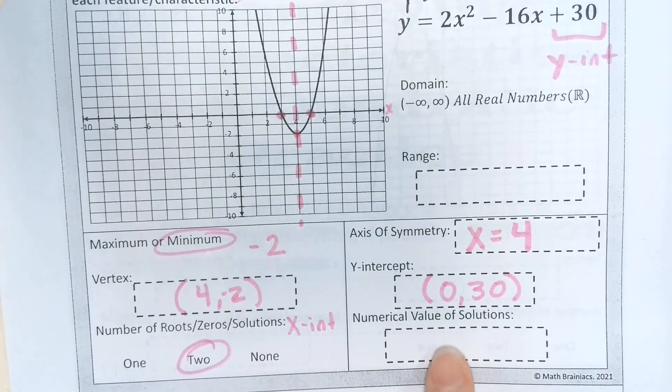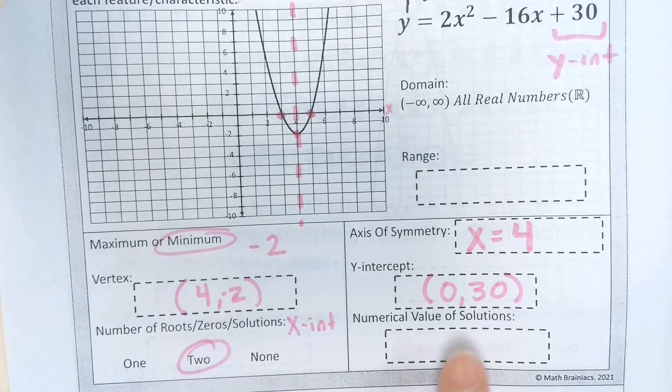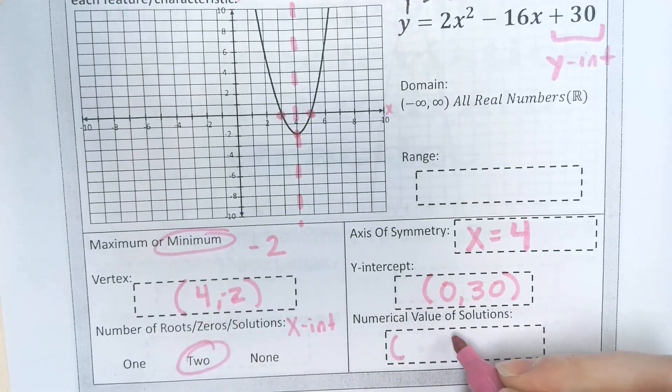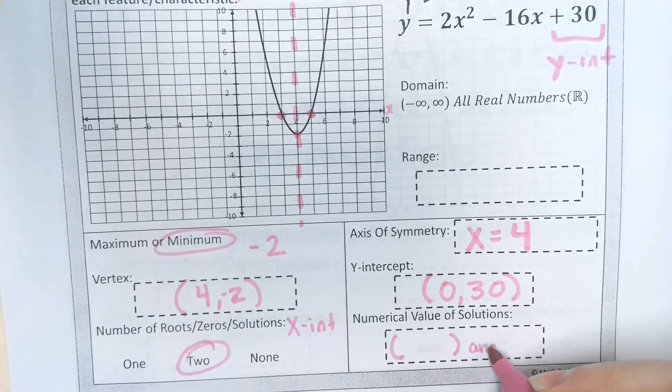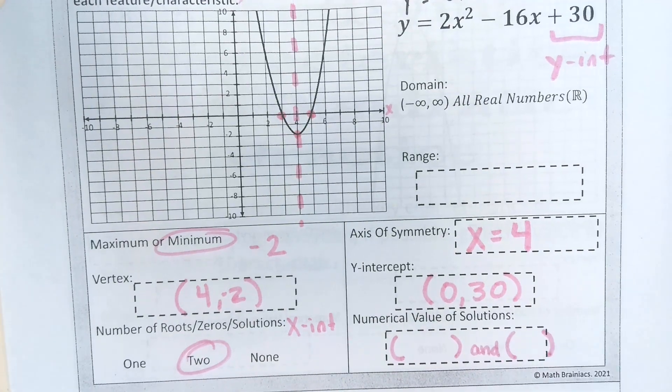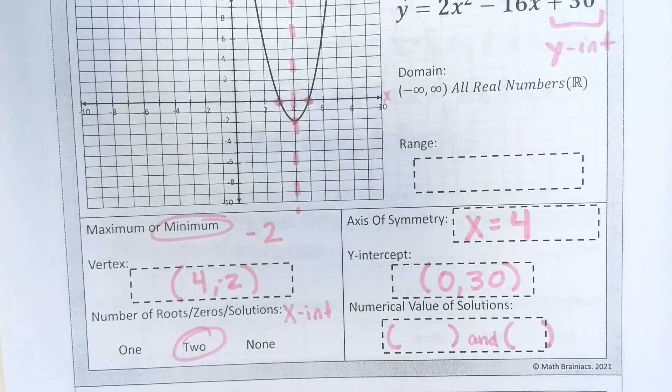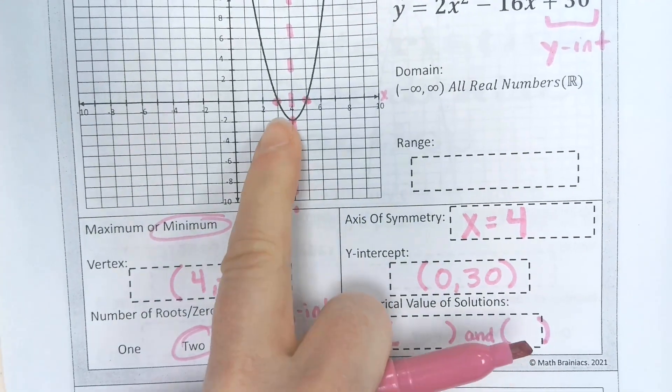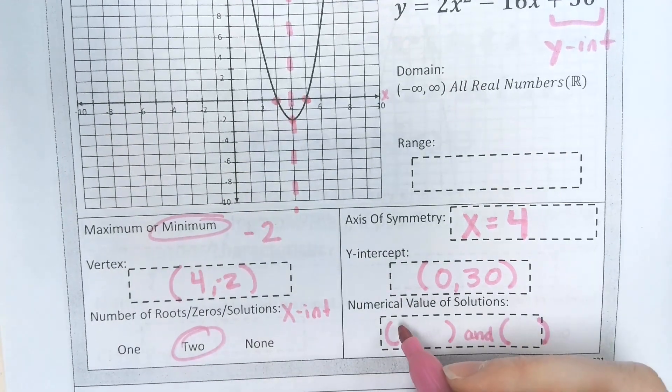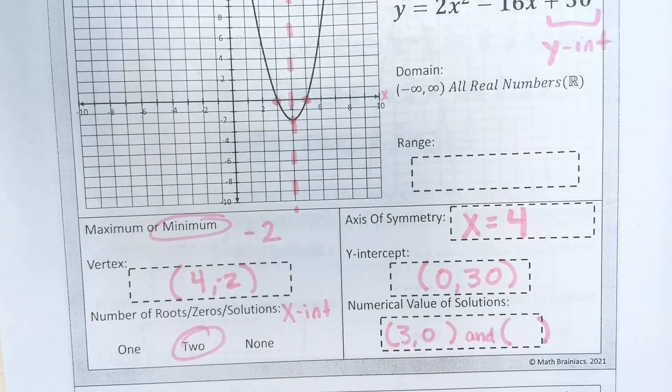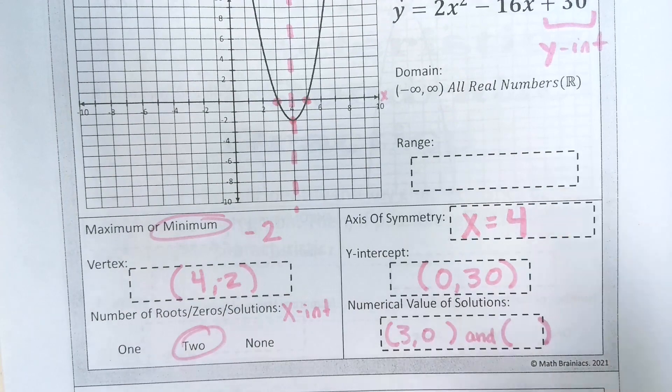Numeric value of solutions. We're going to go ahead and write those as coordinate pairs. Since there are two, they are at (3, 0) and (5, 0).